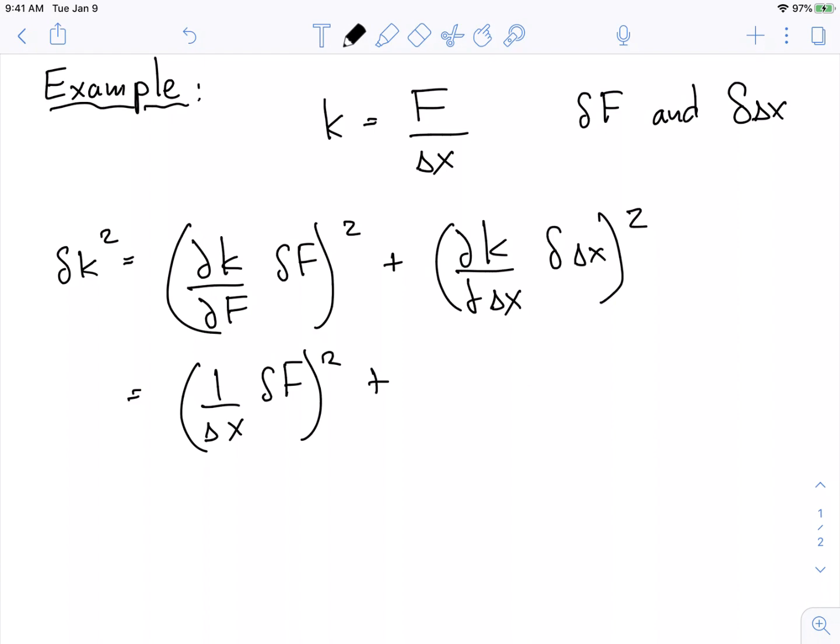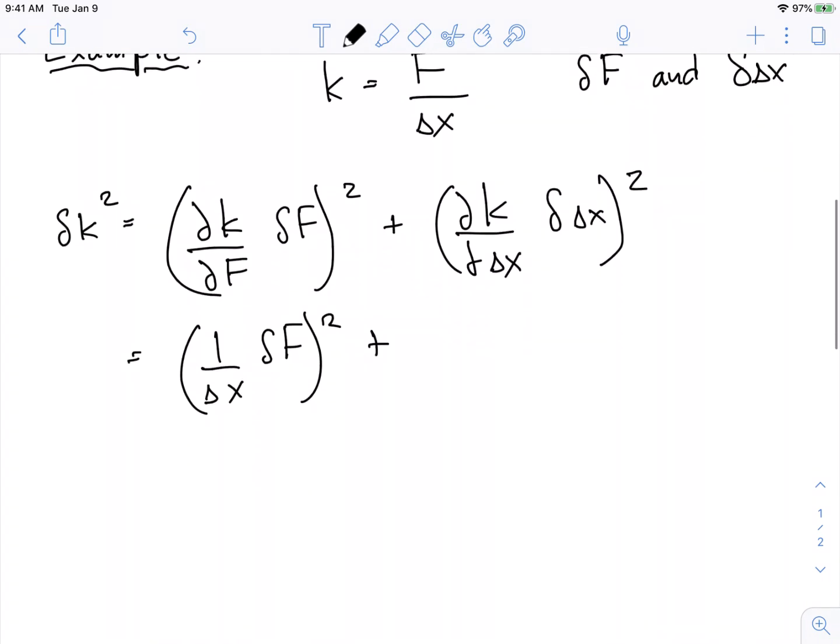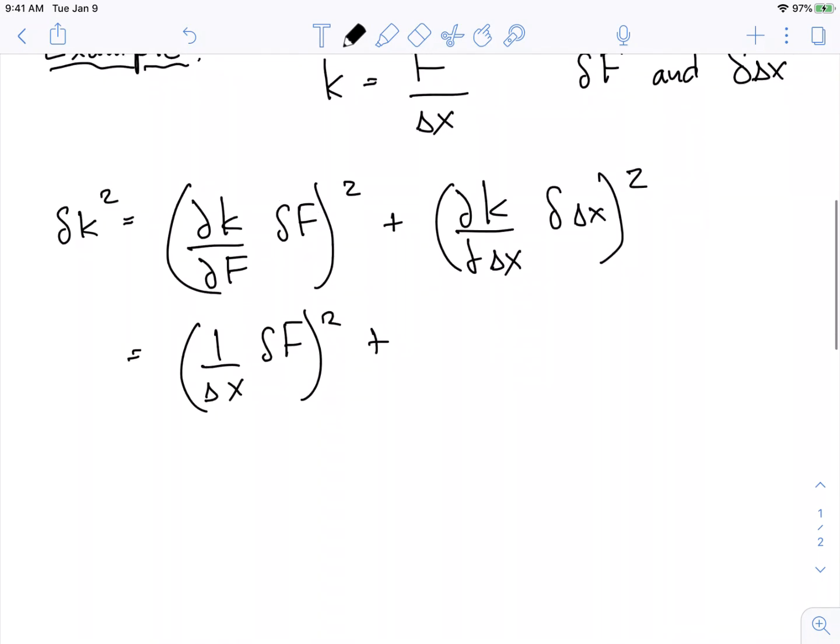What's the derivative of k with respect to delta x? Well, that's like having one over x, right? The derivative of one over x is one over x squared times negative one. Chain rule on it.